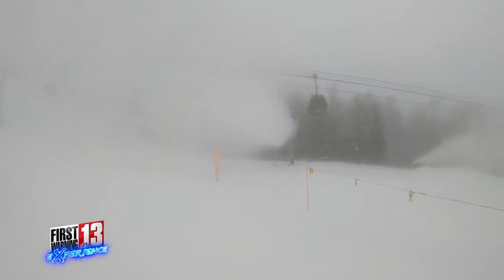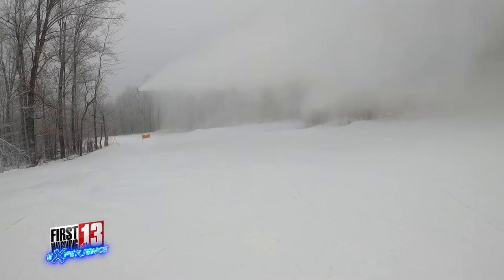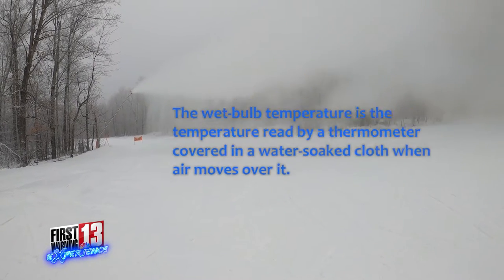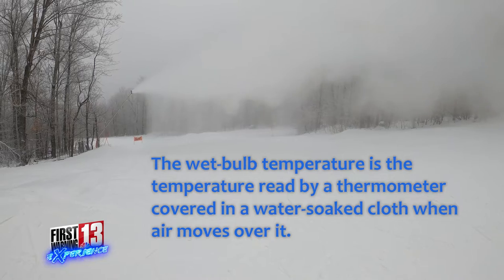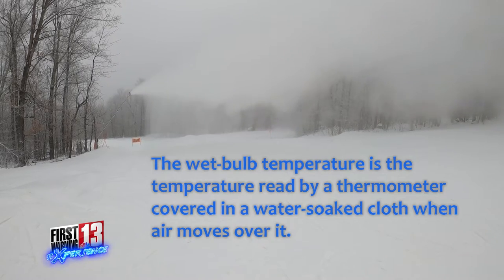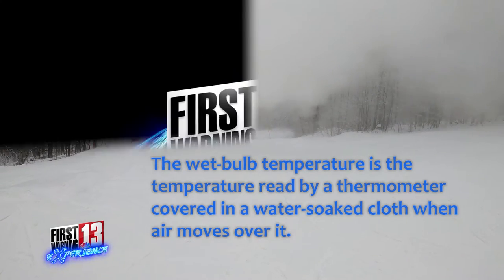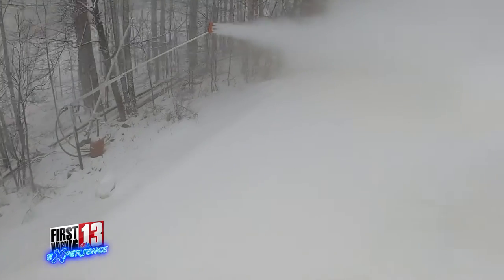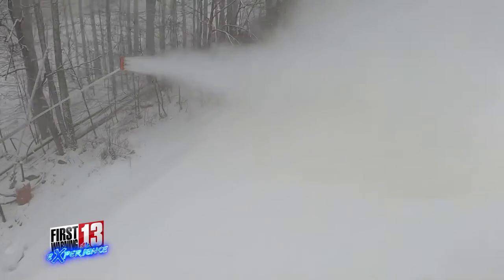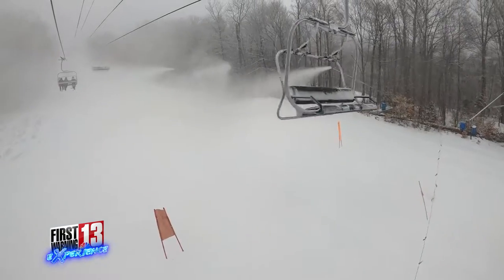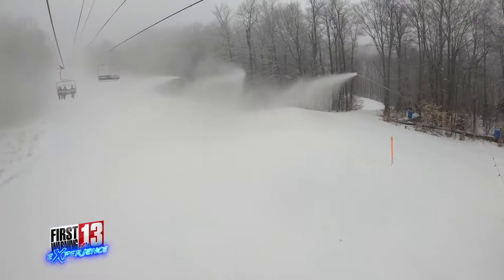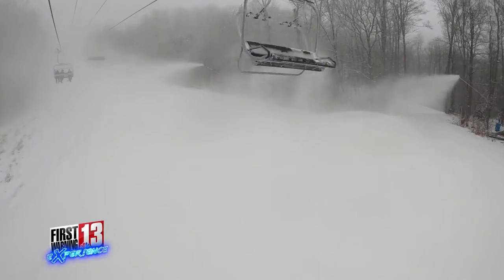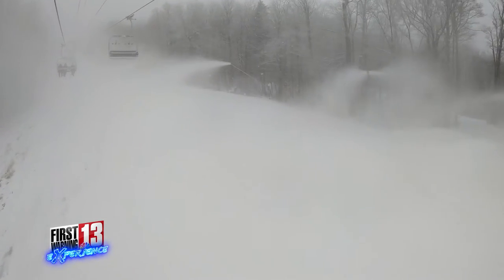For this reason we need to take into account both the temperature and what we call the wet bulb temperature. This is the temperature read by a thermometer covered in a water-soaked cloth when air moves over it. Because the wet bulb temperature takes into account the temperature and the humidity, this helps give us an idea of what would happen when water and pressurized air are shot out of the snow guns at the same time.